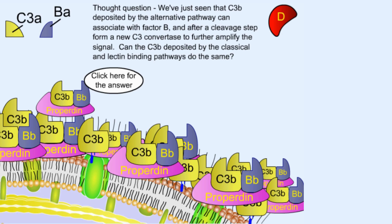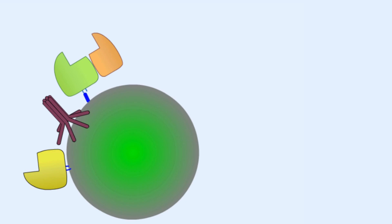Let's see the same part of the classical pathway again because that's the process which is followed there. Now we know that we have ultimately formed C3B, C2B and C4B complex. This whole complex is known as C5 convertase.